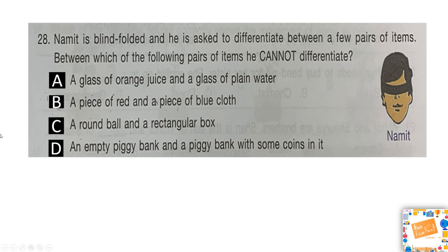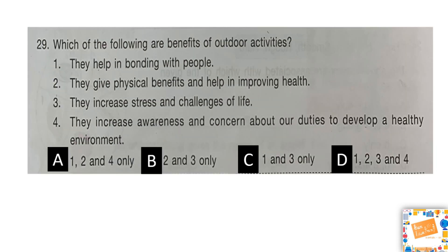The correct answer is B — a piece of red and a piece of blue cloth — because when he feels them they will feel the same, and the only differentiating factor is the color, for which you need your eyes to see.